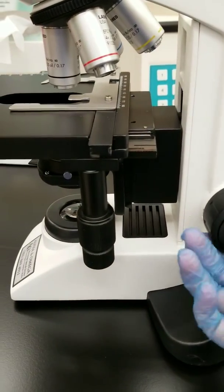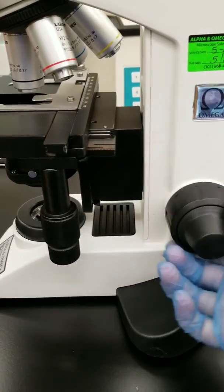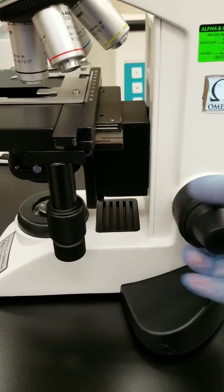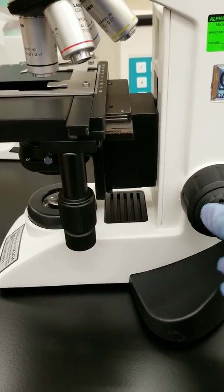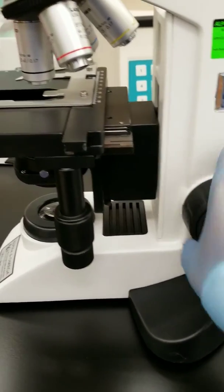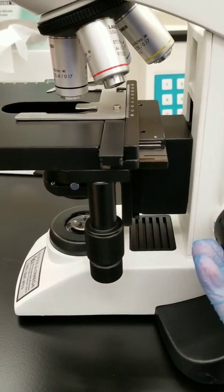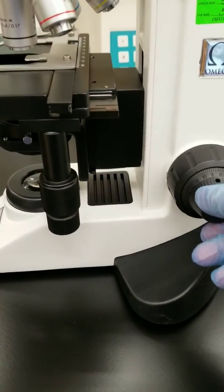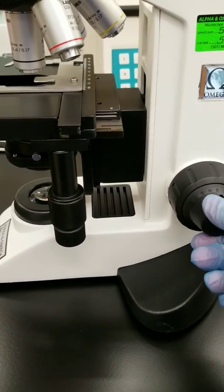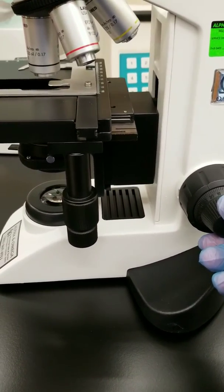The coarse adjustment moves the stage up and down pretty far, whereas the fine adjustment, you can barely see it moving. Once you get the stage to the level you want with whatever lens you're using, you can then adjust how nice the picture is with the fine adjustment knob.